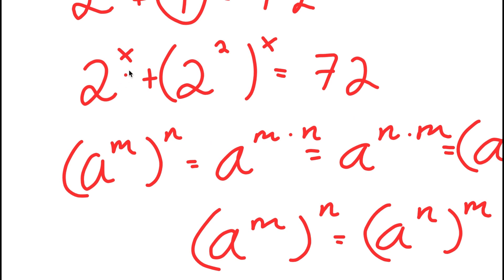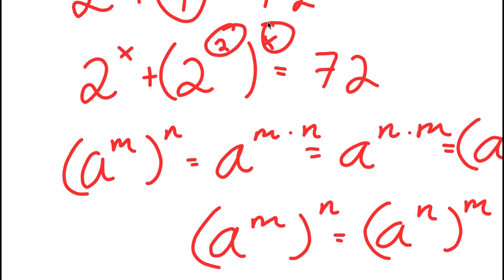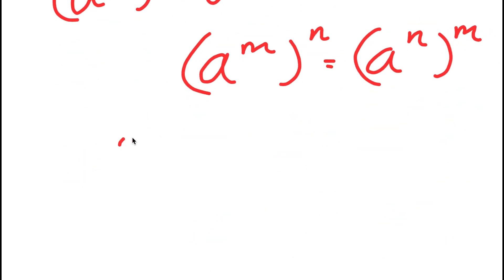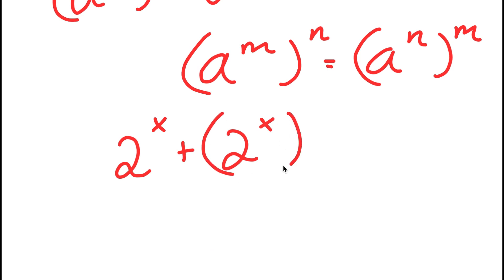Now knowing this, I have 2 to the power of x plus 2 squared to the power of x is equal to 72, and I can switch the places of 2 and x. So now I get 2 to the power of x plus 2 to the power of x to the power of 2 is equal to 72.